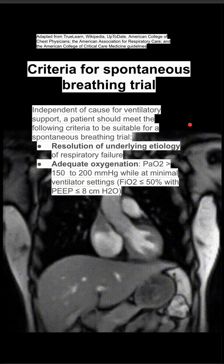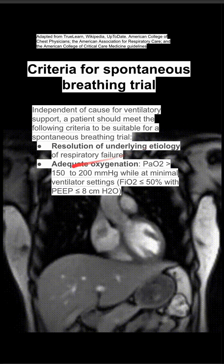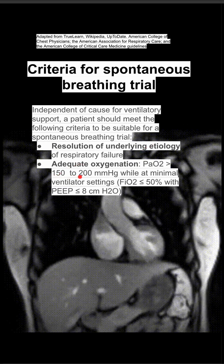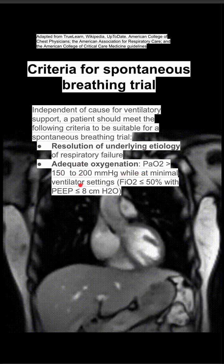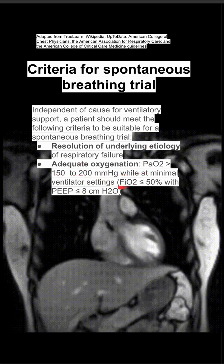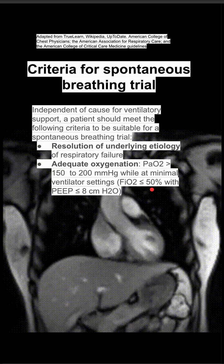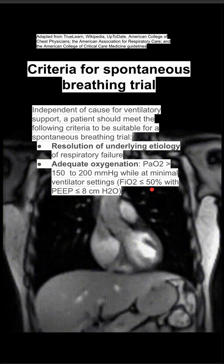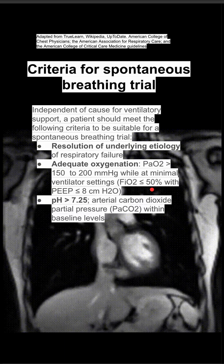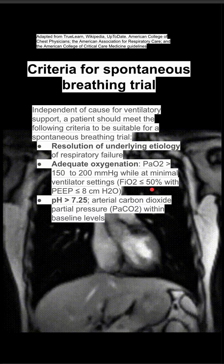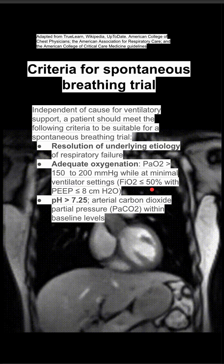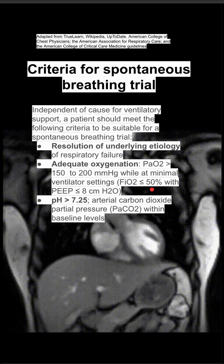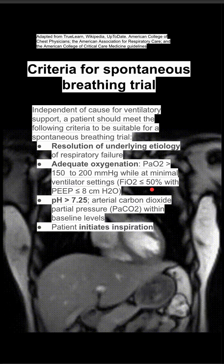The patient should have adequate oxygenation — a PaO2 of 150 to 200 while at minimal ventilator settings: an FiO2 of less than 50% with a PEEP of less than 8 would be suitable. A pH of greater than 7.25 is required to ensure arterial carbon dioxide partial pressure is within baseline levels.